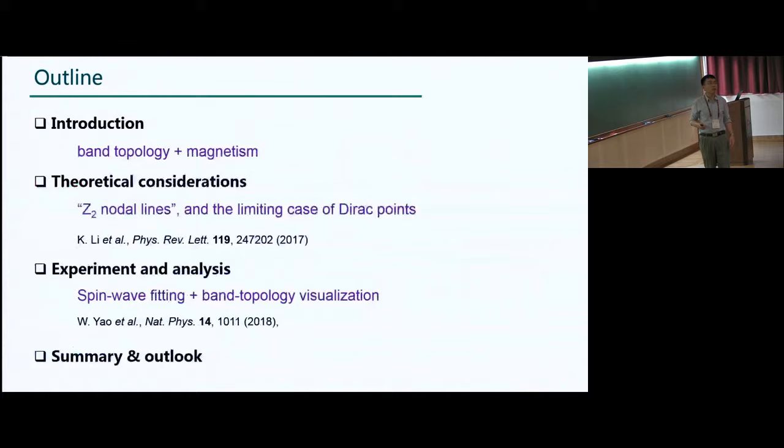So this is an outline of my talk. In order to motivate the research, I will tell you a little about my perspectives on band topology and why we want to do it for magnetic system. And then I will give you some general ideas about theoretical considerations, namely Z2 nodal lines and our limiting case, which is a Dirac point. And then tell you about our neutron scattering experiment. And finally I will make a summary.